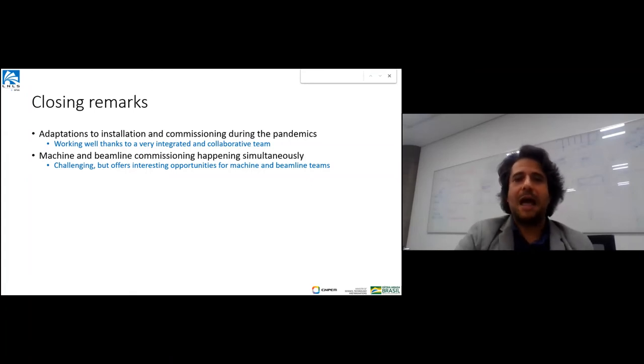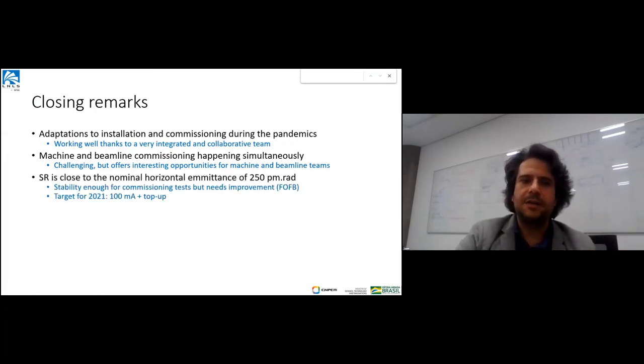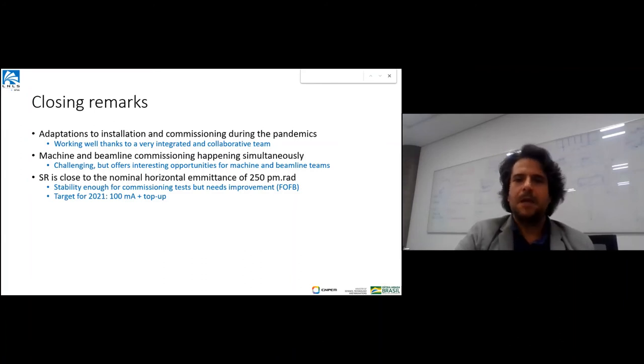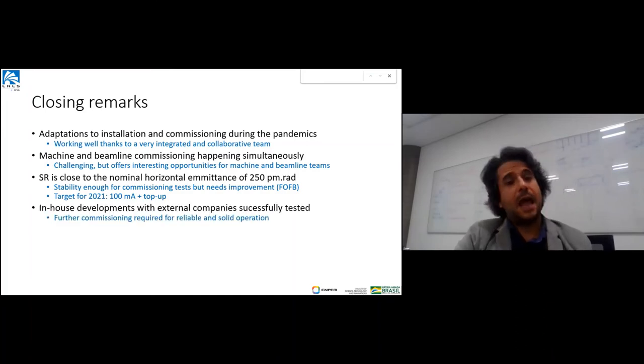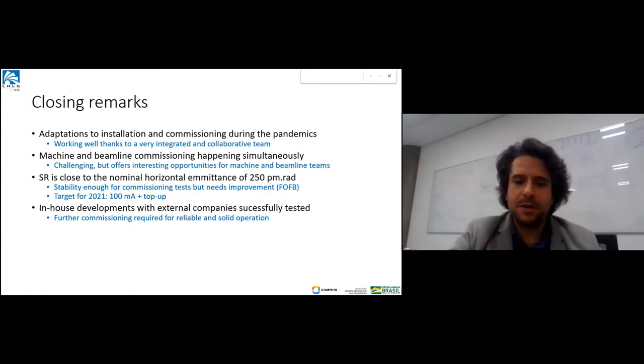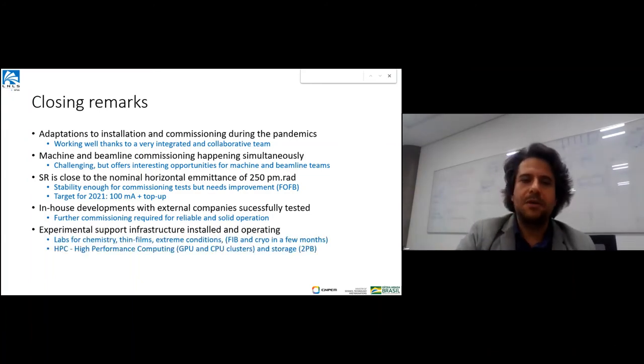Beamline and machine commissioning are happening simultaneously - challenging, but it offers great opportunities for understanding different aspects of synchrotron science. We're close to nominal emittance of 250 picometer radian. We still need to implement fast orbit feedback, and we expect by the end of this year to work with top-up at 100 milliamps. This is still not nominal current, but will allow most experiments we need. We've had lots of developments with external companies - they will soon be available for other communities.